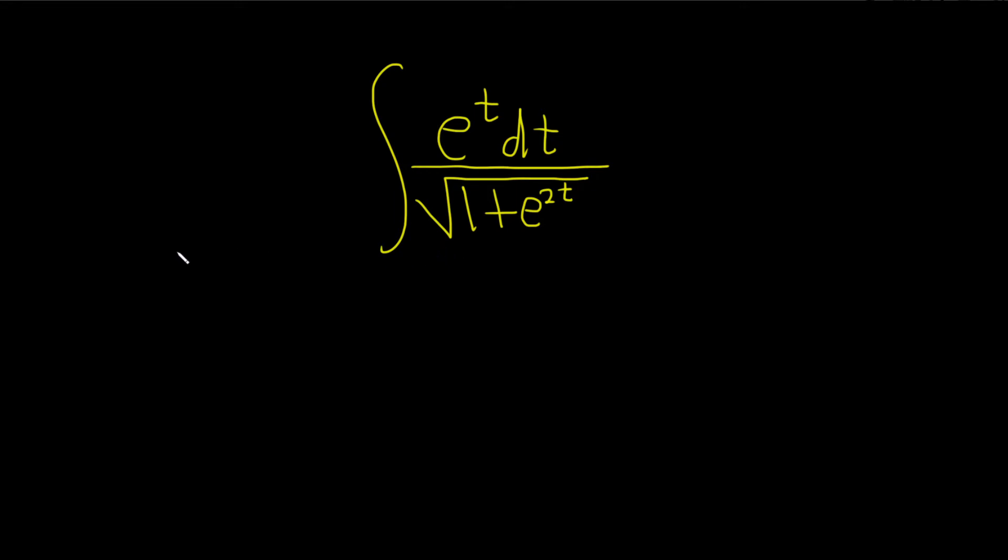So the idea here is that we're going to try to use a formula that looks like this. If you have du over the square root of 1 plus u squared, this is equal to the inverse hyperbolic sine of u plus c.